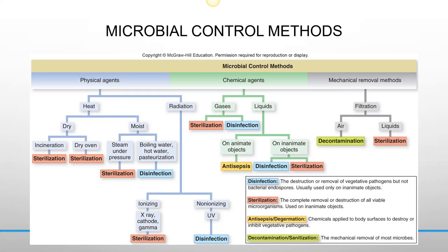Microbial control methods include physical agents like heat and radiation. Heat can be dry or moist, and includes incineration, dry oven, steam under pressure like an autoclave, boiling water, and pasteurization. Cold can decrease the rate of multiplication but usually doesn't kill microorganisms — we'll talk more about that. There's also ionizing radiation.